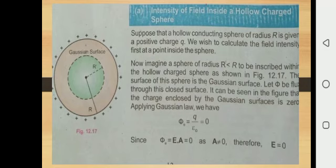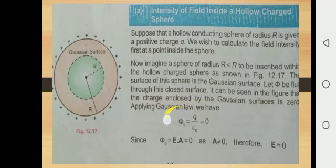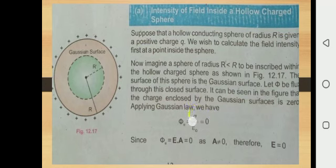Since there is no charge inside, there are no electric field lines, so the electric flux is zero through the Gaussian surface. According to Gauss's Law, the formula is: electric flux equals 1 over epsilon-zero times the charge enclosed. Since there is no charge, the charge value is zero. When we put Q equal to zero, the electric flux through this closed surface — through this hollow sphere — is zero.